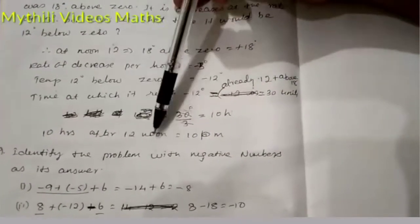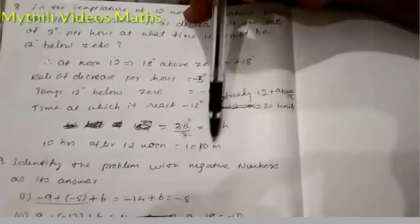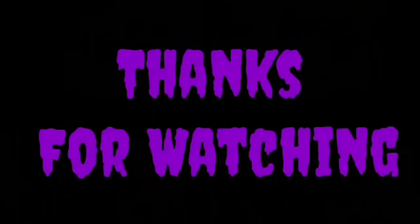22 hours. As per railway time, 22 hours means 10 PM. That's all.